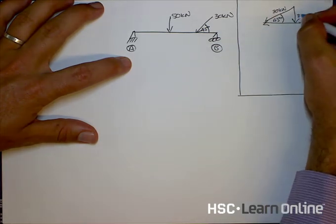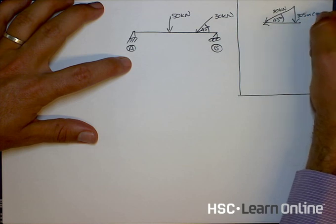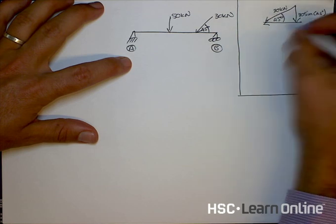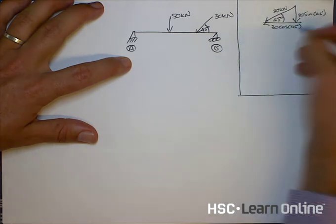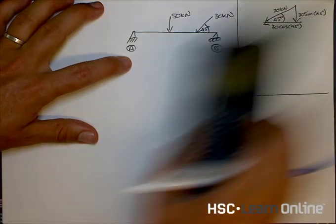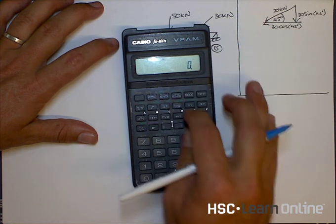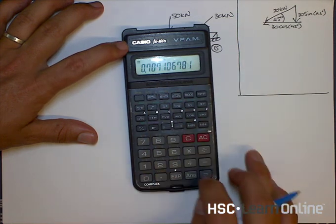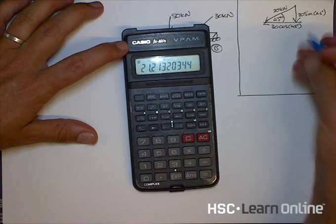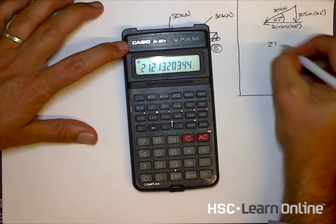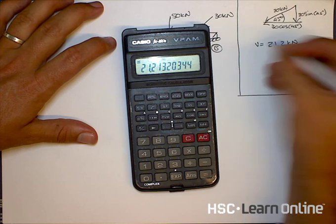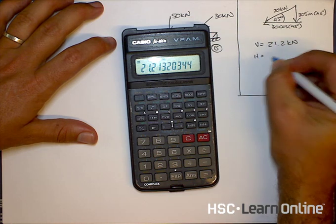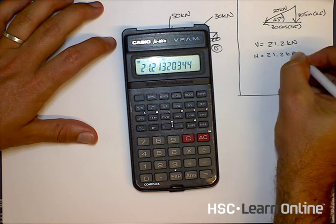So this is going to be 30 sine of 45 and this is 30 cos of 45 degrees. And if we grab our calculators and do that quickly, sine of 45 times 30 is going to be 21.2 kilonewtons. So it's vertical and because it's 45 the horizontal is going to be the same, 21.2 kilonewtons.